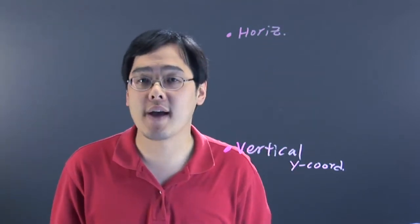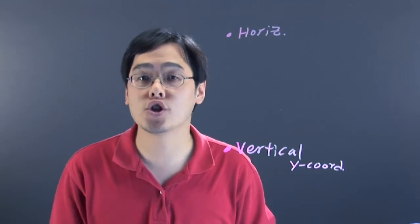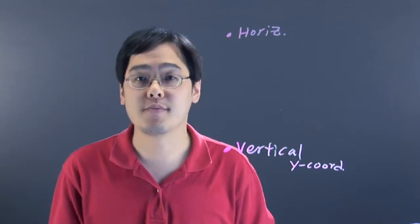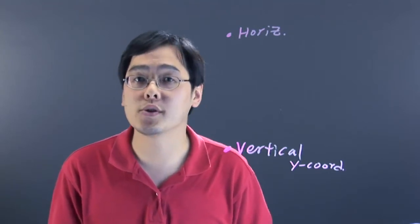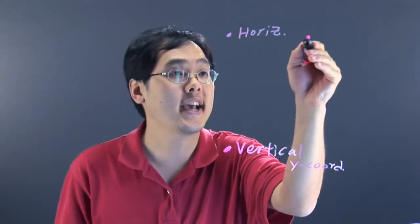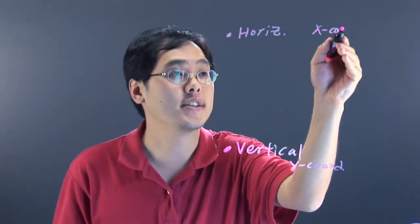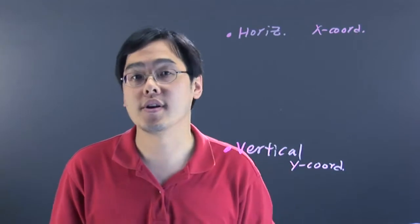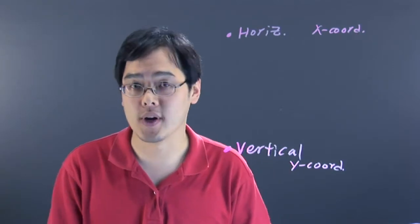Horizontal transformations mean that the graph can shift to the right or to the left. Because horizontal deals with the x-axis, it's the x coordinates that are affected, and you're either going to add or subtract the x coordinates.